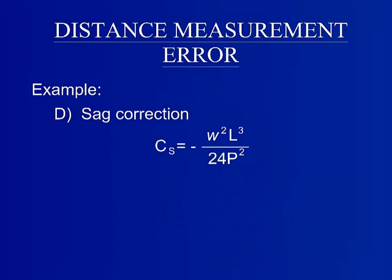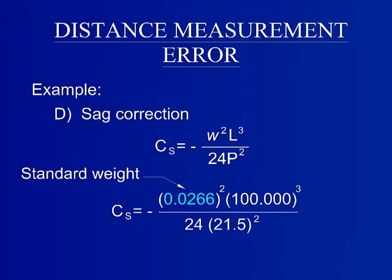Part D is the sag correction. The standard weight for steel tape also can be found by measurement, calculation, or obtained by the manufacturer. But for the purposes of this example, it is 0.0266 pounds per foot. The error due to sag for this segment is negative 0.0638 feet.